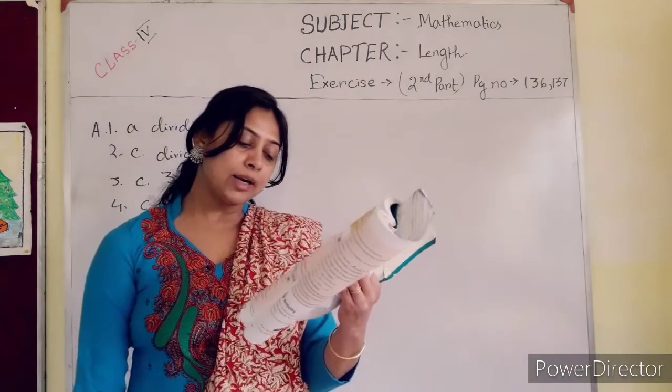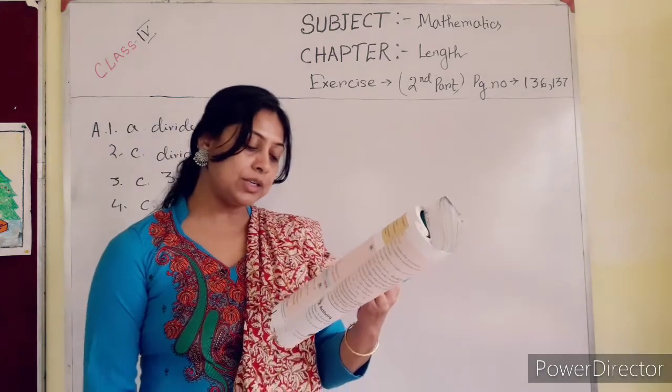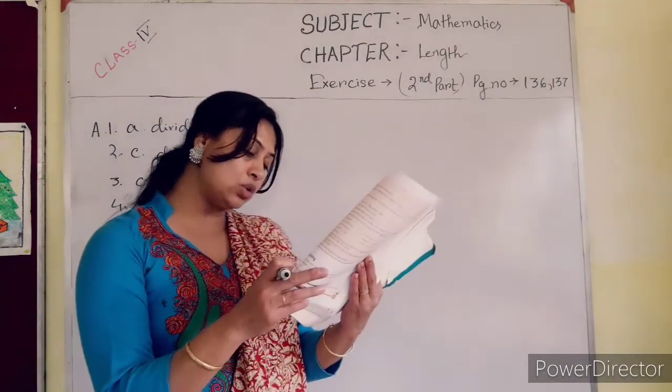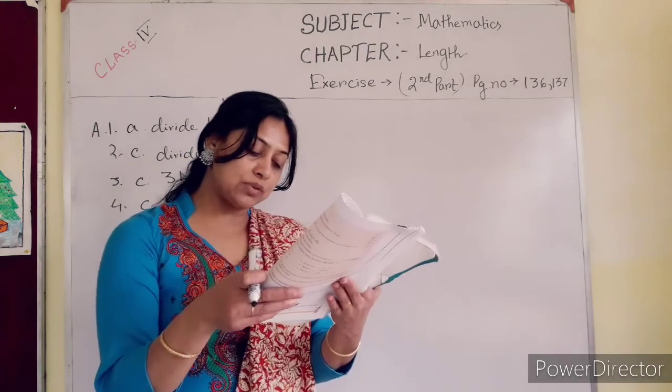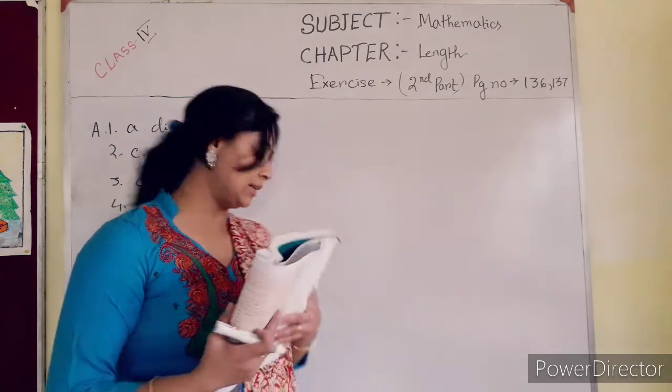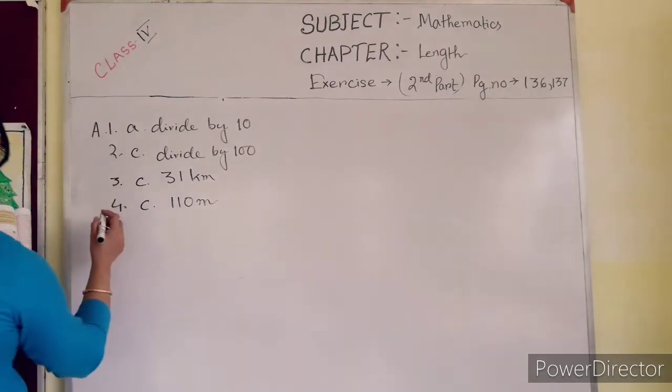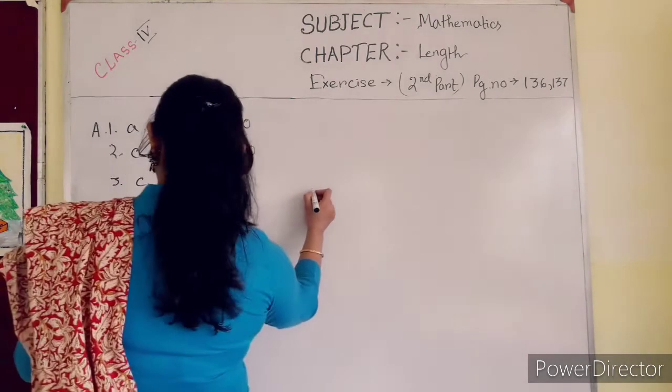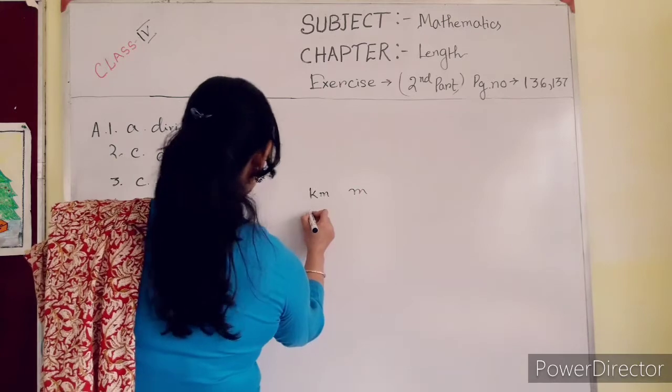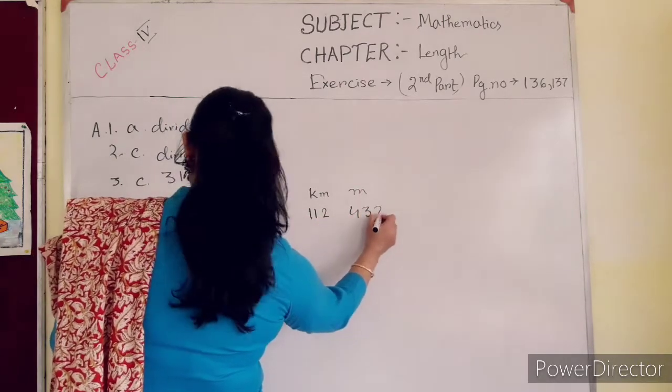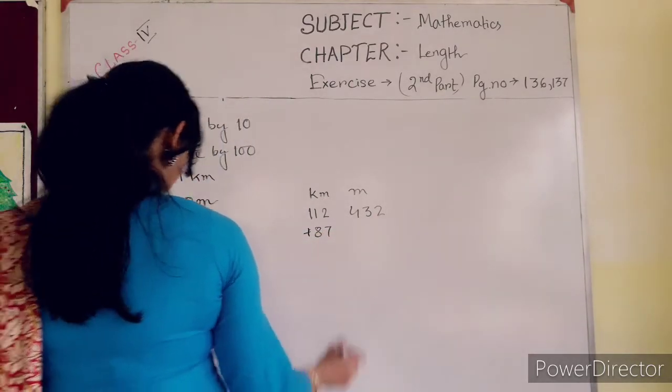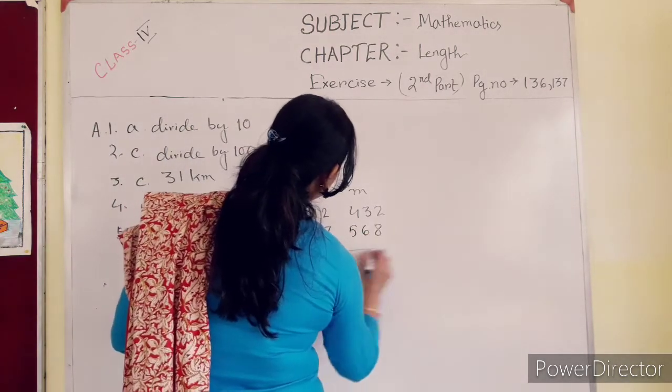Now number 5. 112 km 432 m plus 87 km 568 m. First you have to add this one, after you have to subtract 9900 meters from your result. Kilometer meter, 112 kilometer 432 meter plus 87 kilometer 568 meter.